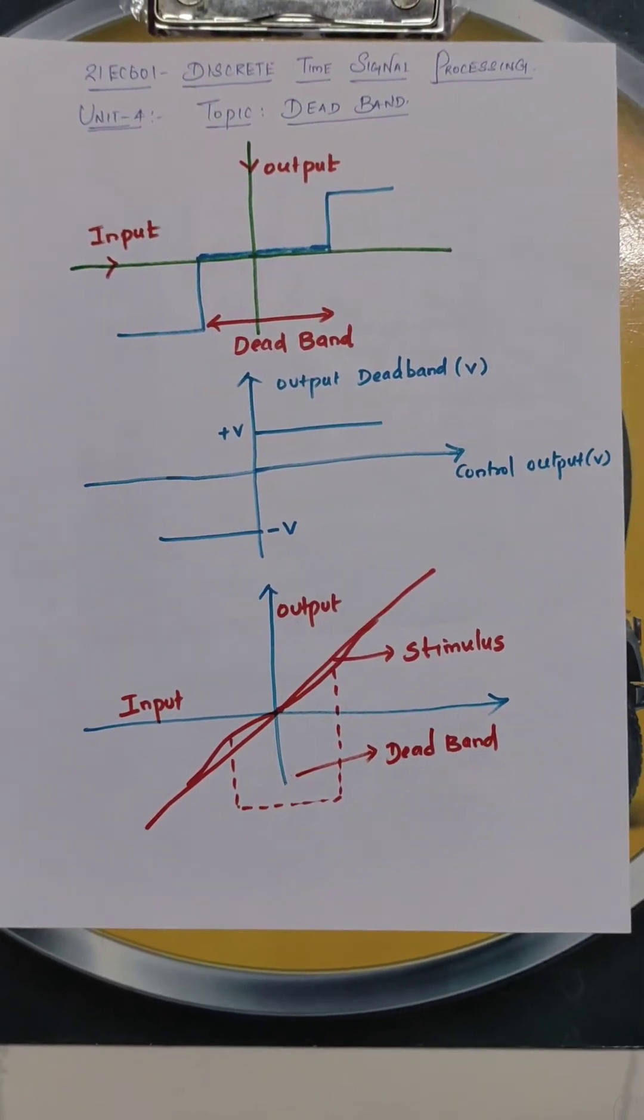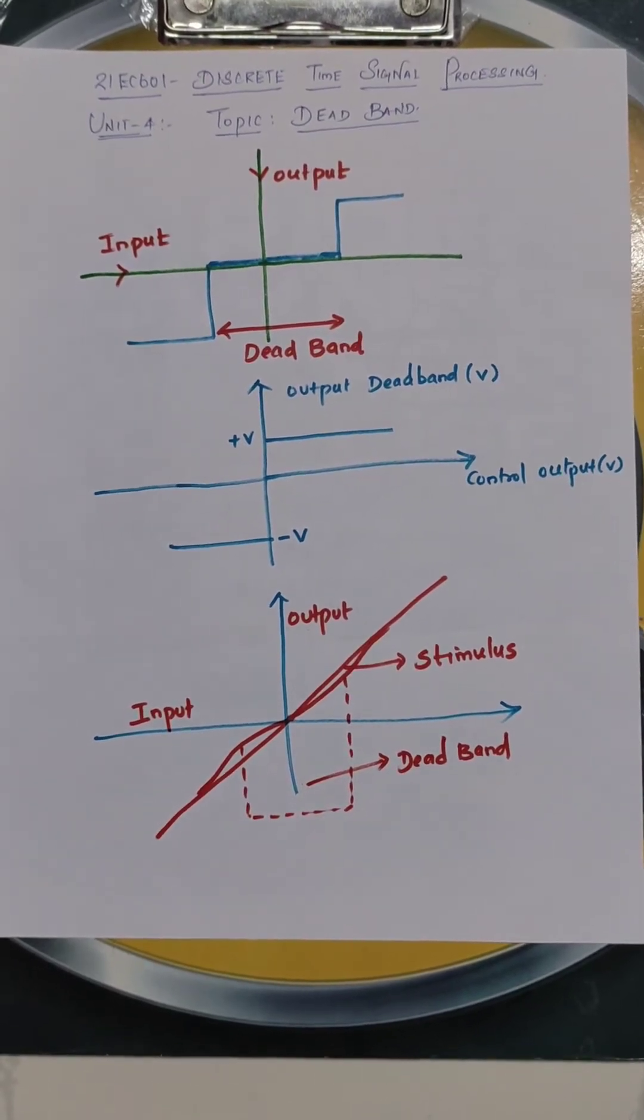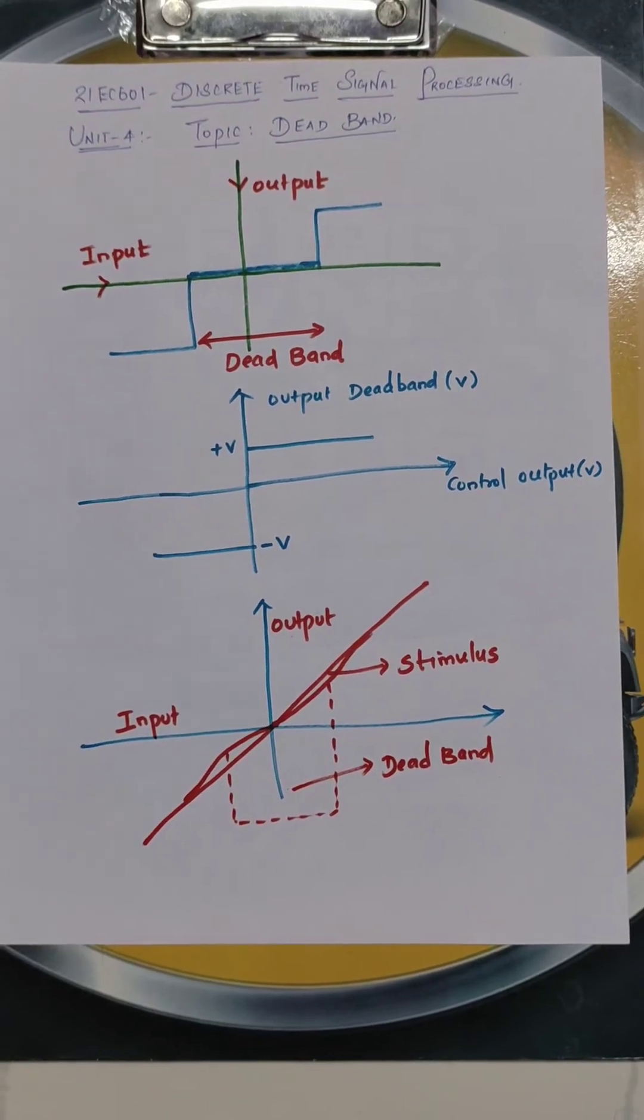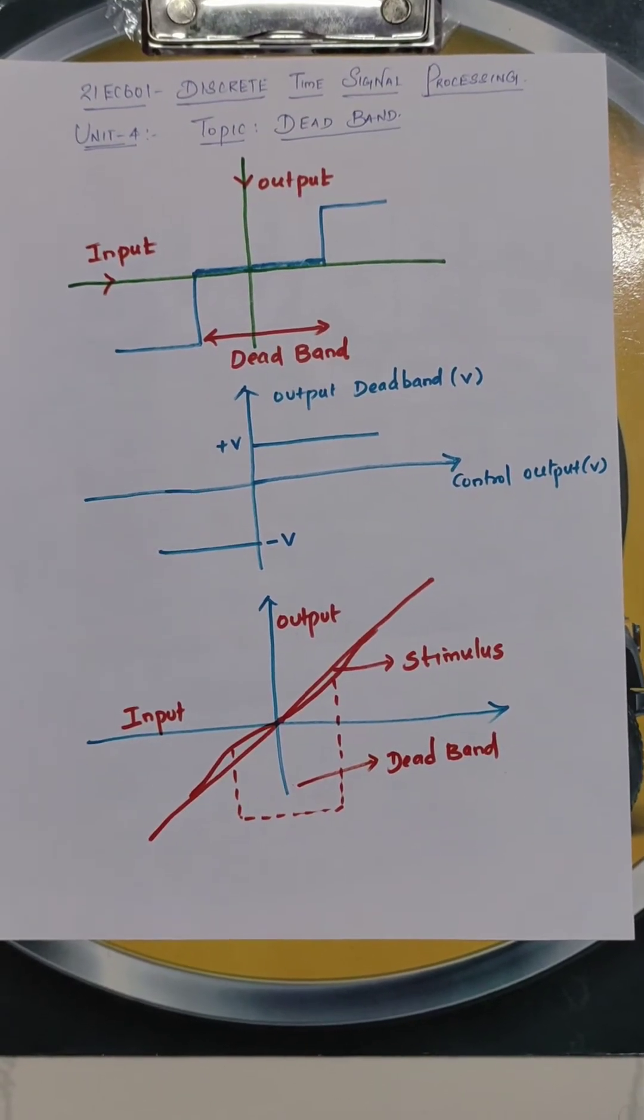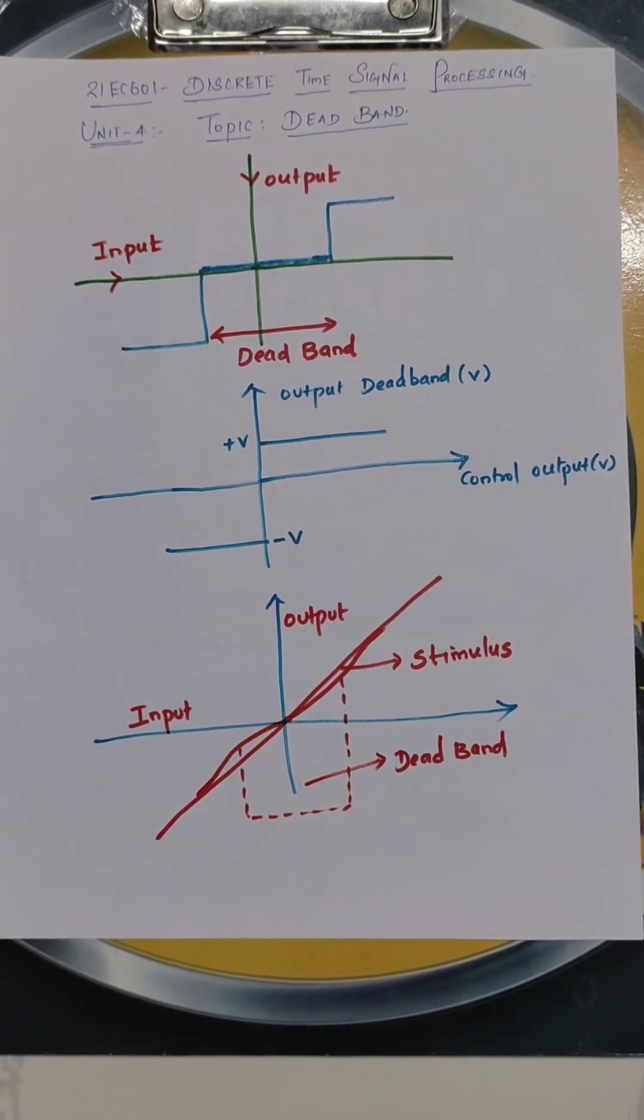Deadband deals only with the limit cycle oscillation concepts. Limit cycle oscillation is when we add two numbers, 0 and 1, the output will be 1. When we add 1 and 1, it becomes 10. So 0, 1 will be the carry. That carry is called an overflow error.